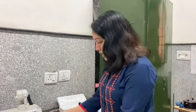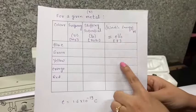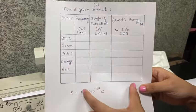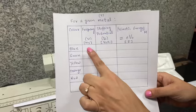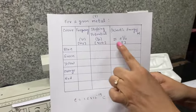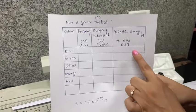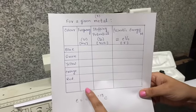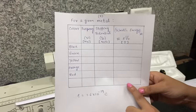Begin the experiment. In the first part, we will see the variation between frequency of light and maximum kinetic energy. We will use light of different colors for different frequencies, obtain the stopping potential for each color, calculate the maximum kinetic energy using eV₀, and then plot a graph between frequency and maximum kinetic energy to observe the nature of the relationship.